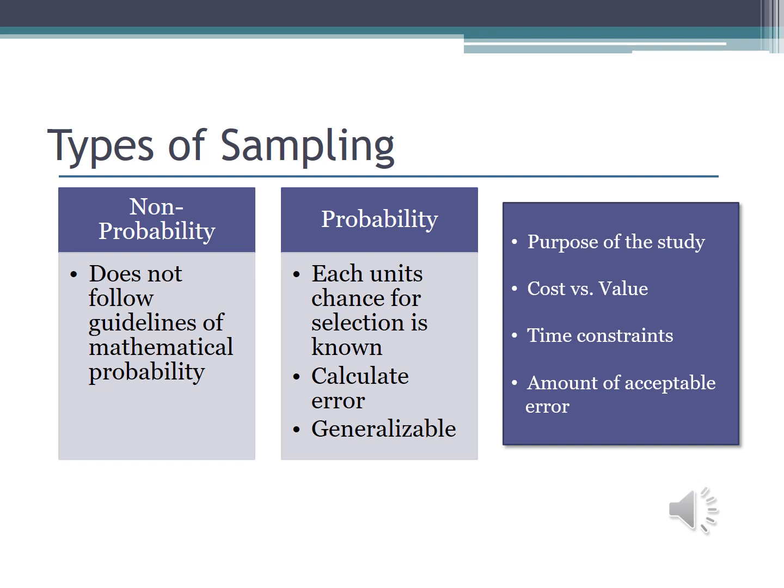Also consider the cost versus the value. Is it worth it to take the time to try to get a random sample? These can take a lot of time and effort, but if it's going to produce richer, more meaningful data, it's worth it. And as with anything, you need to consider time restraints. You may be up against a submission deadline; in that case, they are likely just looking for some exploratory research upon which to build later, so it's alright to go with a non-probability sampling.